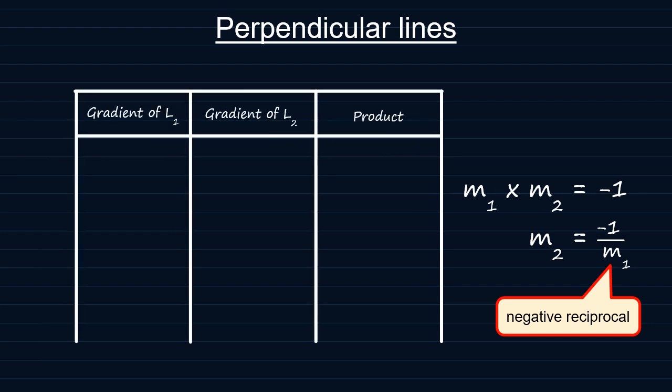So, if L1 and L2 are perpendicular and L1 has a gradient of M, which is M over 1, then L2 should have a gradient of minus 1 over M. That is the negative reciprocal of M, so that the product of the gradients should give us minus 1.